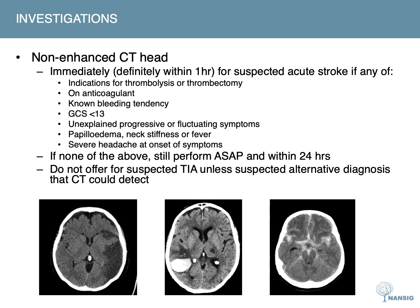It is no longer recommended by NICE to offer CT to people with suspected TIA unless there is clinical suspicion of an alternative diagnosis that CT could detect. On CT, an ischemic stroke appears as a wedge-shaped hypoattenuation, or dark area, of brain tissue, with loss of grey matter-white matter differentiation and sulcal effacement. Hyperattenuation or brightness within an artery indicates a clot. A hemorrhagic stroke appears as a large hyperdense lesion — acute bleeding appears bright white and the longer the blood has been present, the darker it appears. We can see an intracerebral hemorrhage in the middle image and subarachnoid hemorrhage on the right.